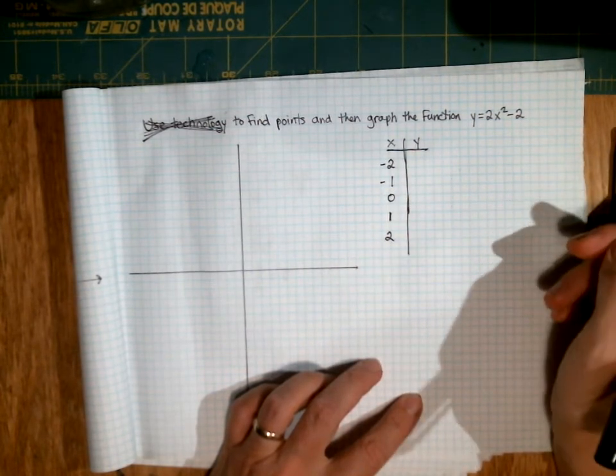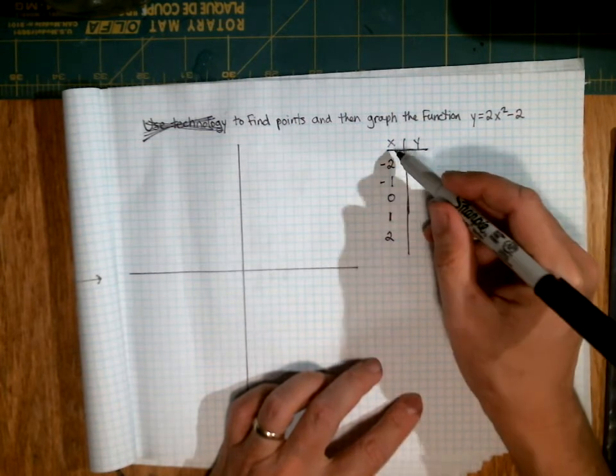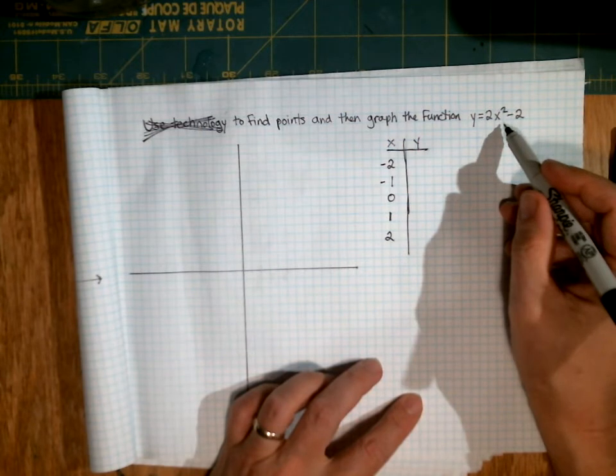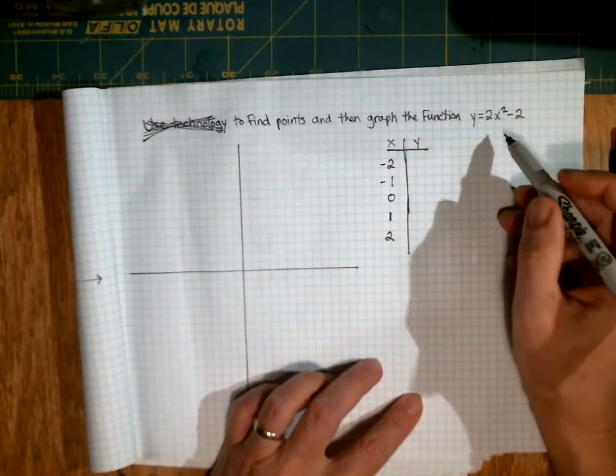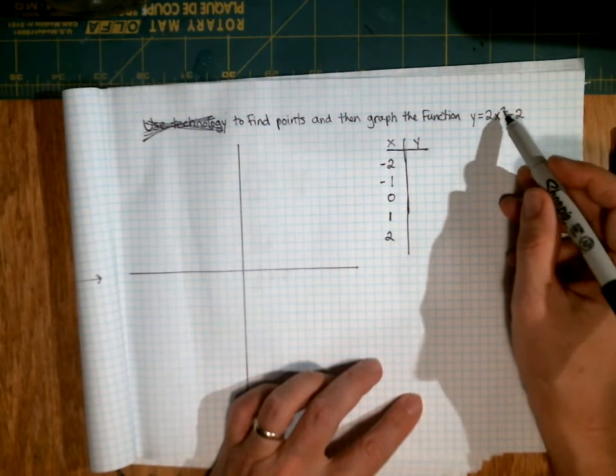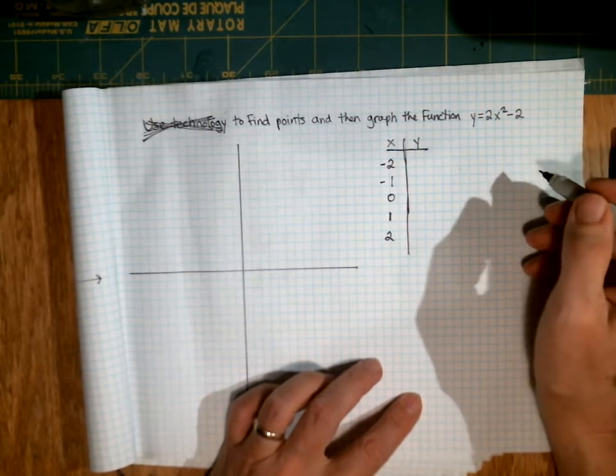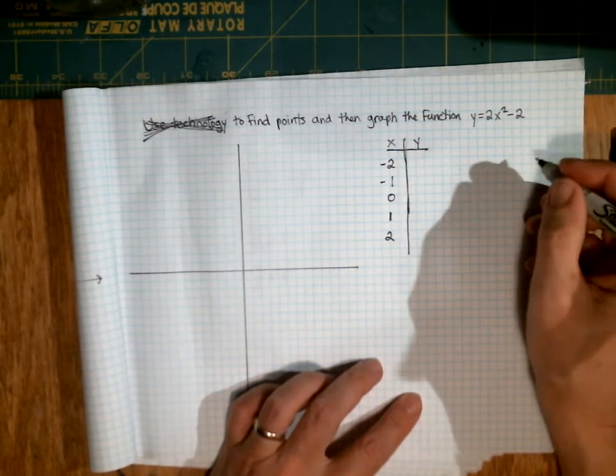And then similarly to what we did last time, now that we have chosen these x values, we're going to take each one and plug it into this equation where we see x. So this equation is a little different in that x is squared. So we're going to have to square that before we do other stuff with it. So I'm going to start out with the first value, negative 2.